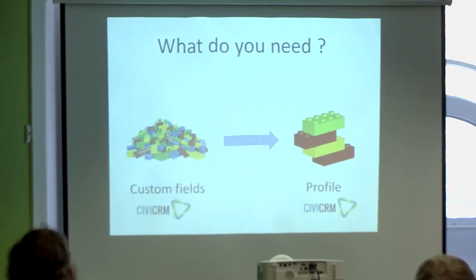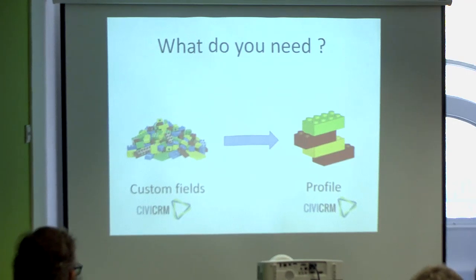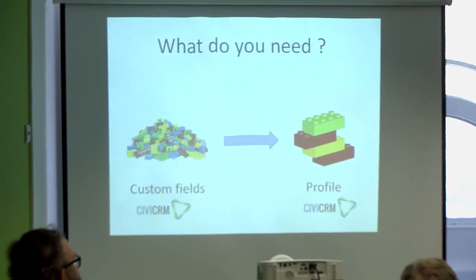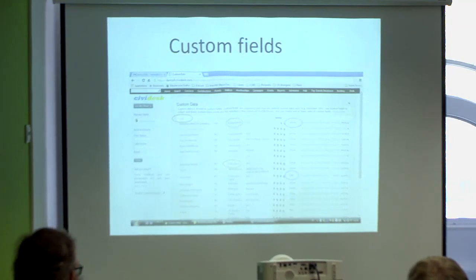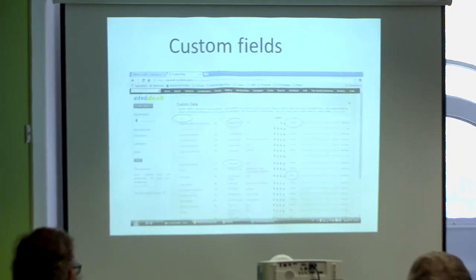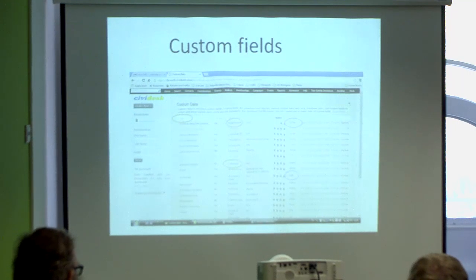So now to build a profile, what do you need? You need custom fields. First you have your custom fields and then you build your profile. That's all you need - custom fields and profiles, always in there, and then you just follow the screens. Just a few reminders because I realized yesterday that people were not very familiar with custom fields. Custom fields are organized in sets. They are used for either organizations or individuals - when you create your custom field you decide what it's used for. Regarding display, they can be inline or in tabs as a new tab in the contact record.